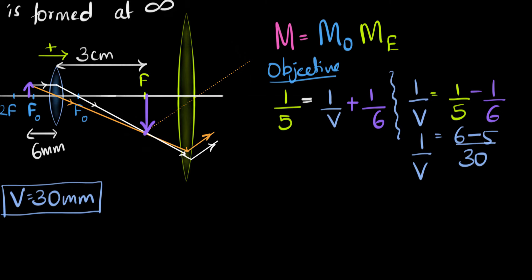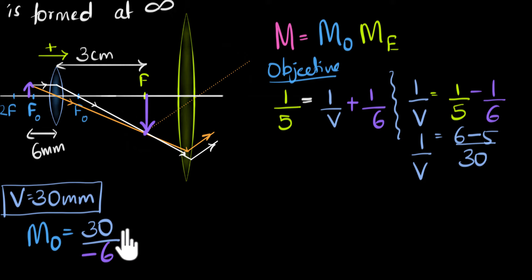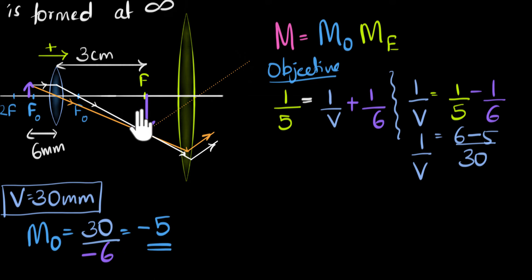Now we use the magnification formula for the objective. Magnification of the objective equals V/U, which is 30 mm divided by −6 mm, giving us −5. The magnitude is 5, meaning the image height is five times the object height. The minus sign tells us it's an inverted image. So the magnification of the objective is 5.